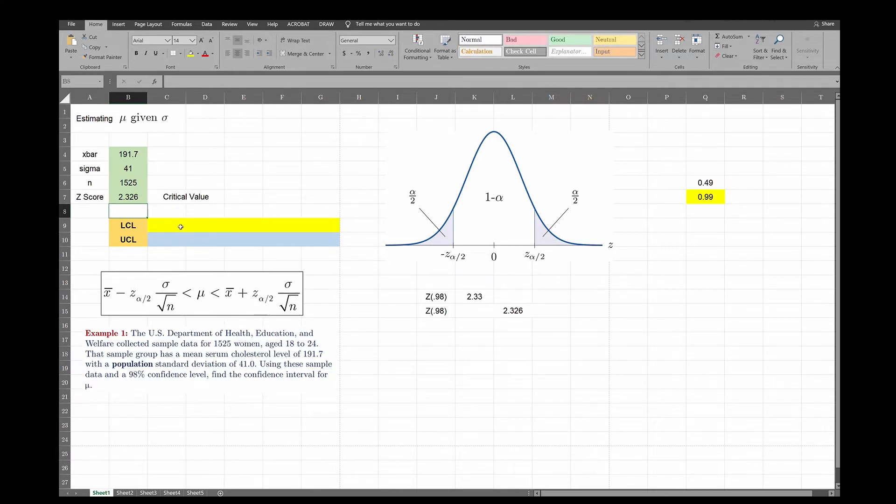Now I'm ready to find the lower confidence limit and the upper confidence limit. My lower confidence limit would be, and here's the formula, will be equal to x bar which is that minus the z score which is that times sigma. That's the order in which you do it. So x bar minus z times sigma, sigma is that, and then you divide by square root of n but n is 1,525.